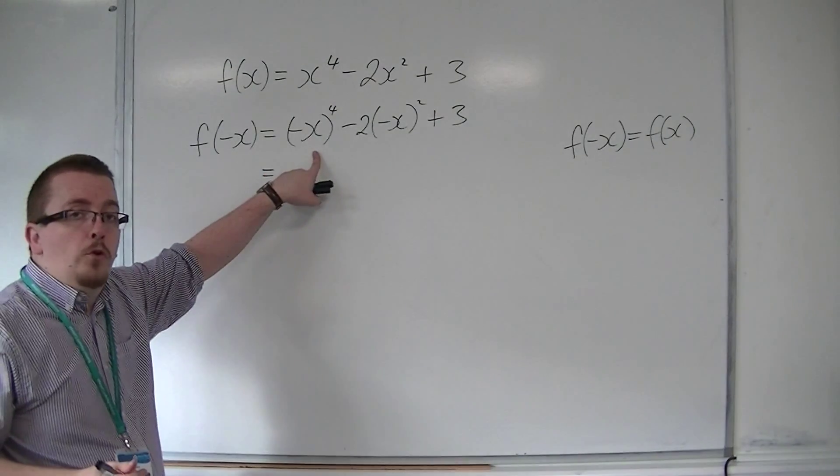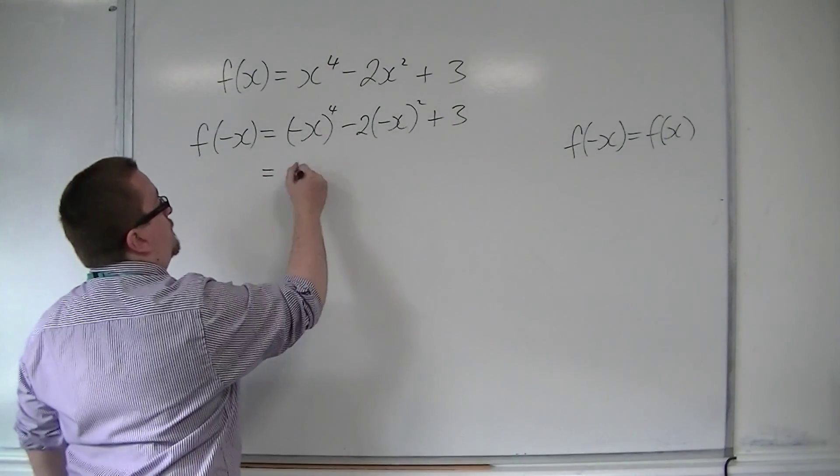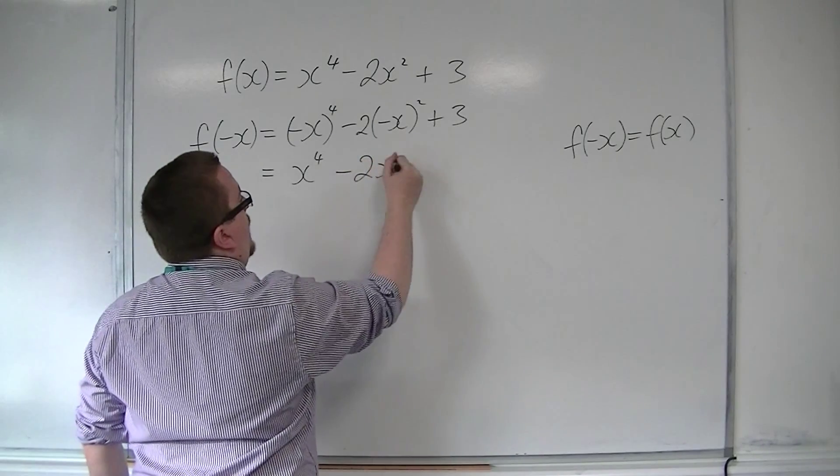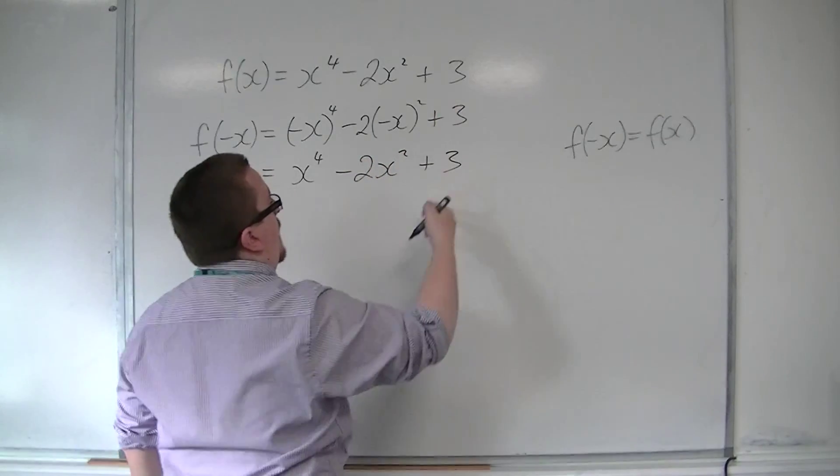So minus x to the 4 is just x to the 4. Minus x squared is just x squared, and the 3 remains as it is.